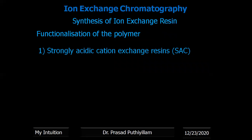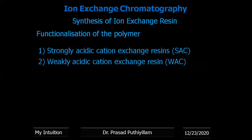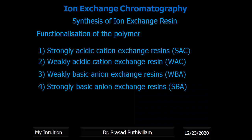Then comes the functionalization of the polymer. Once we obtain the polymer matrix, the required functionalization is done to convert it into a strongly acidic cation exchange resin, strongly basic anion exchange resin, weakly acidic cation exchange resin, or weakly basic anion exchange resin — these are the different categories to prepare or synthesize.